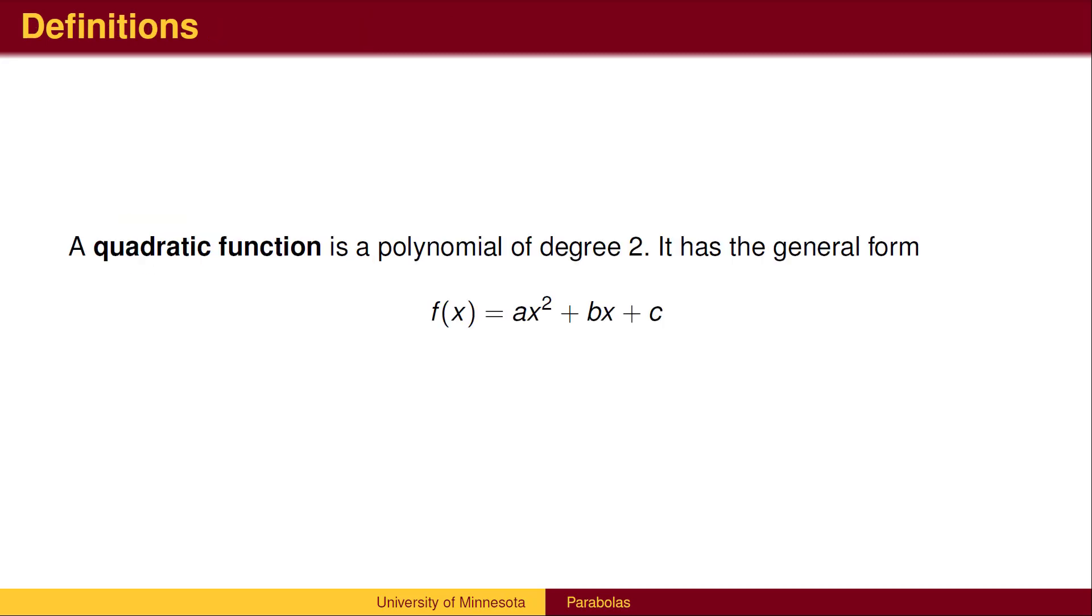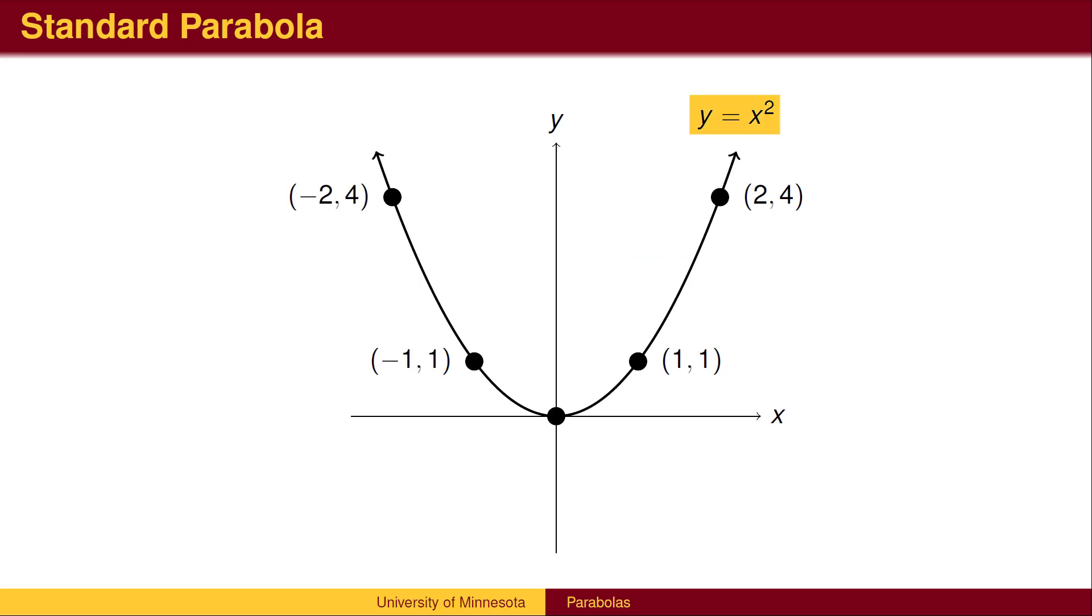A quadratic function is a polynomial of degree 2. Its graph is called a parabola. The standard parabola y equals x squared is symmetric with respect to the y-axis. The y-axis divides the parabola into two identical branches. The y-axis is therefore the axis of symmetry. The vertex of the parabola is at the origin.